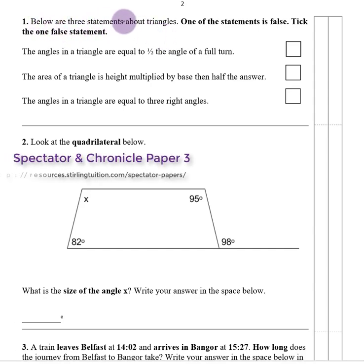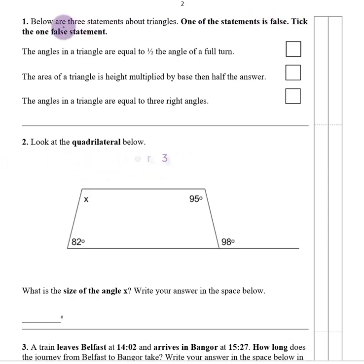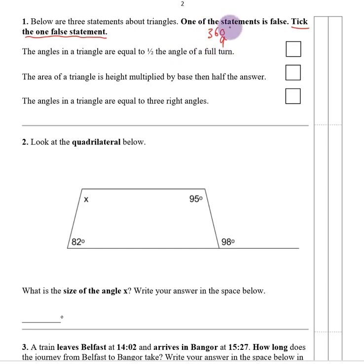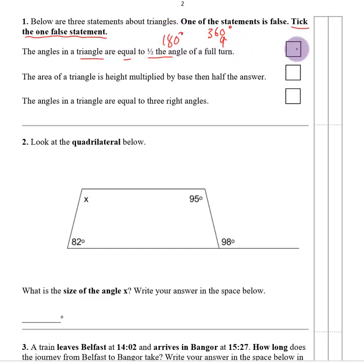Question one. Below are three statements about triangles. One of the statements is false. Tick the one false statement. The angles in a triangle are equal to half the angle of a full turn. A full turn is 360 degrees, so half is 180 degrees. The angles in a triangle are equal to 180, so they are also equal to half the angle of a full turn. That is true.